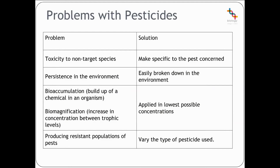The main problems and solutions with pesticides: they might be toxic to non-target species, so we need to make sure it's specific to the pest concerned. They may persist in the environment, so we need to ensure they can be easily broken down. Bioaccumulation — buildup of the chemical in an organism — and biomagnification — the increase in concentration between trophic levels — can be reduced by applying pesticides in the lowest possible concentrations. We also have the problem of producing resistant populations of pests, so we need to vary the type of pesticide used.